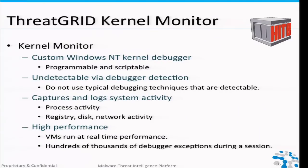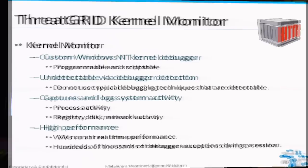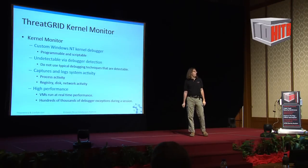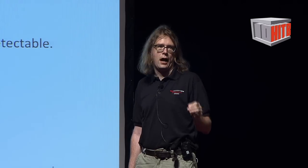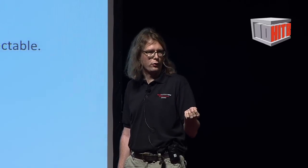Let me get into the cool stuff about our technology and part of why we're able to scale. We wrote our own in-house Windows NT kernel debugger. It's programmable and scriptable, and it's undetectable via debugger detection. We have a hypervisor-level debugger — we hook in at the hypervisor level. So we are undetectable, aside from the fact that we're running inside a virtual machine. Malware samples cannot say 'you're running a debugger, I won't run.'